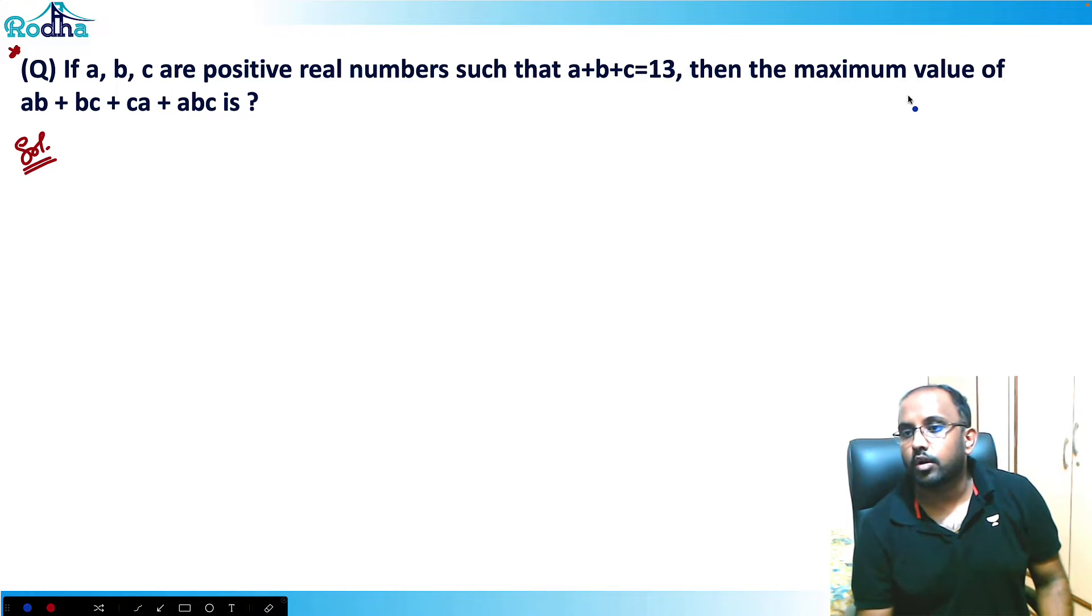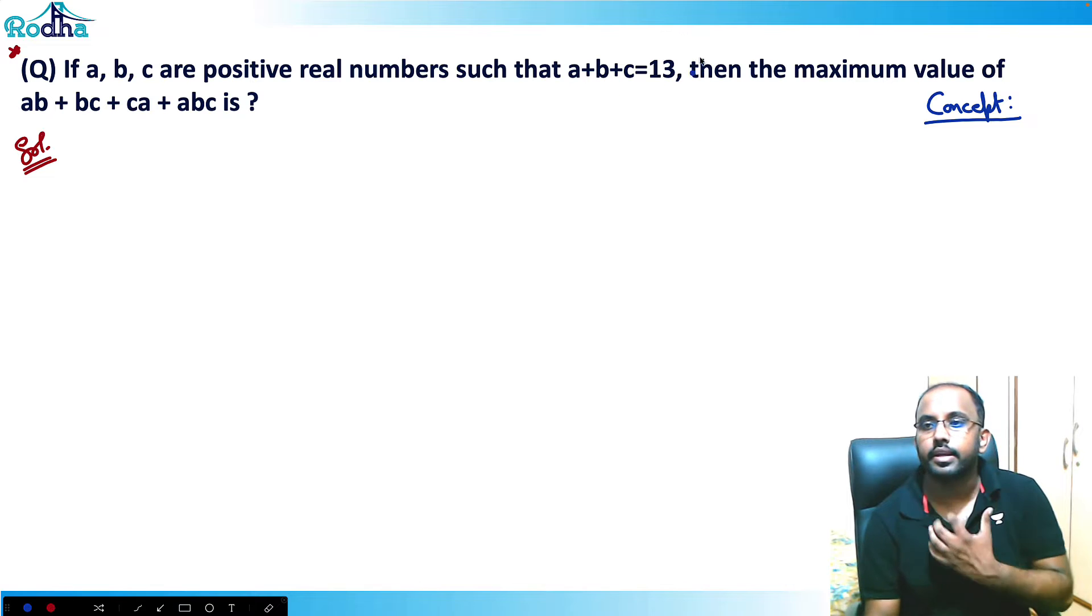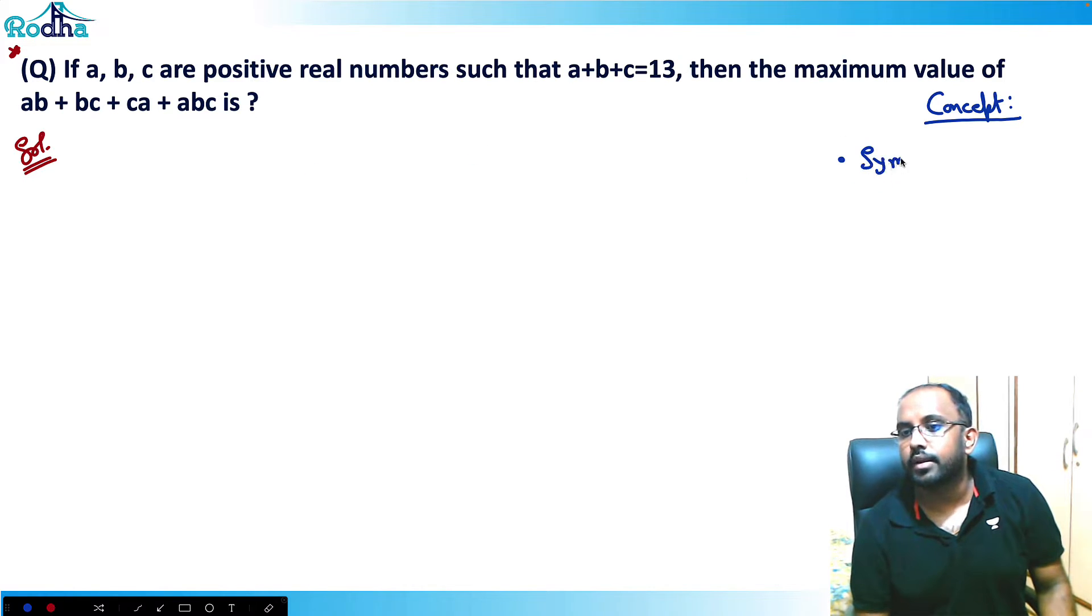What is the concept used behind such questions? This question says that if a, b, c are positive real numbers such that a plus b plus c equals 13, then the maximum value of ab plus bc plus ca plus abc is what? Now the equation like ab plus bc plus ca plus abc is called a symmetric or cyclic equation.